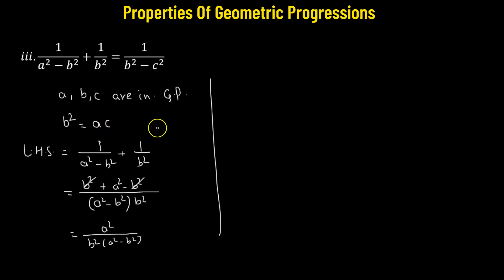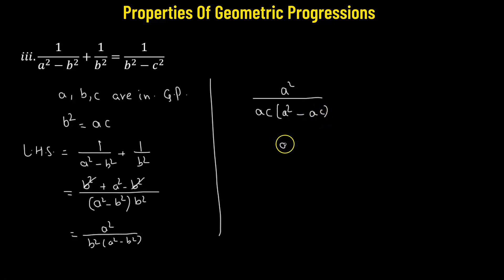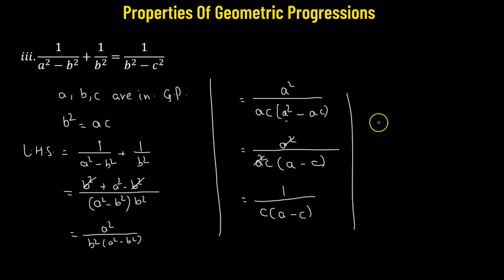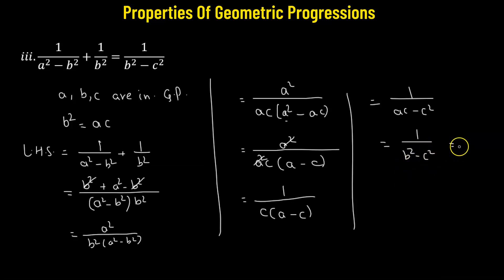Now we substitute b squared with ac, giving us a squared divided by ac times (a squared minus ac). Taking a as the common factor from (a squared minus ac) gives a(a minus c). So we have a squared divided by ac times a times (a minus c). We can cancel a squared from numerator and denominator, leaving 1 divided by c(a minus c), which equals 1 divided by ac minus c squared. Since ac equals b squared, this becomes 1 over b squared minus c squared — the expression on the right hand side. Hence proved.